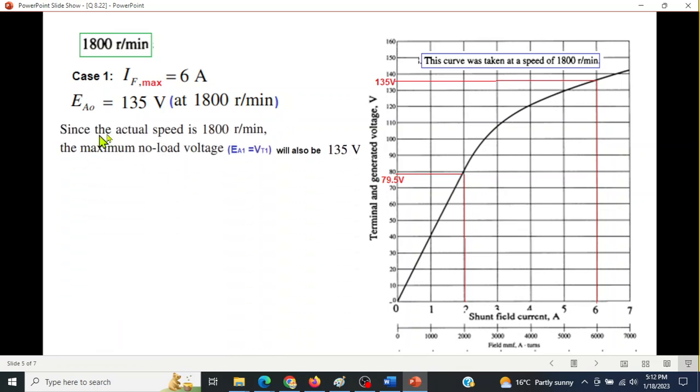And since the actual speed is 1800 also, therefore the maximum no load voltage will be same as that of the graph voltage. That is Ea1, we can say, or simply Ea, which is equal to the terminal voltage, will also be 135.